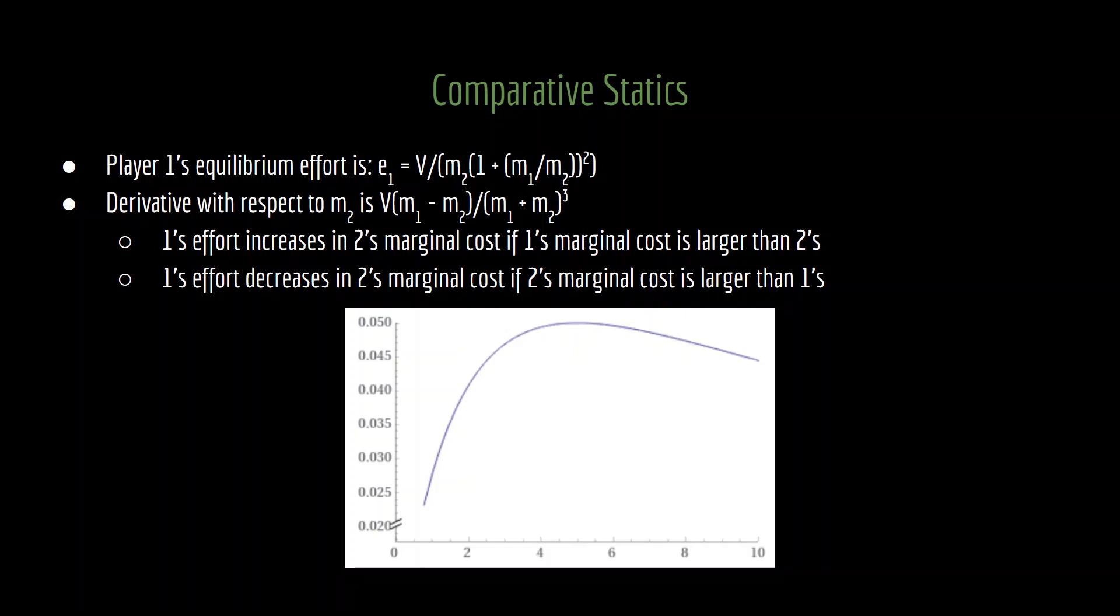What we see here is that both of those intuitions can be correct. If we take the derivative of player one's equilibrium effort with respect to M2, we get the value times player one's marginal cost minus player two's marginal cost, all divided by the sum of the marginal costs cubed. As a result, if player one's marginal cost is larger than player two's marginal cost, that derivative is positive, and thus increasing two's marginal cost will result in an increase in player one's effort. On the other hand, if player two's marginal cost is larger than player one's marginal cost, then that derivative is negative, and increasing player two's marginal cost will result in a decrease in player one's effort.